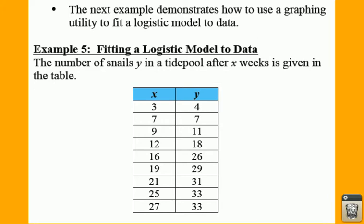Your Example 5 is talking about a number of snails, which is y, in a tidepool after x weeks, given by this table. You have your x values and your y values. Remember, your x is your number of weeks, your y is going to be your number of snails, so don't get these confused.